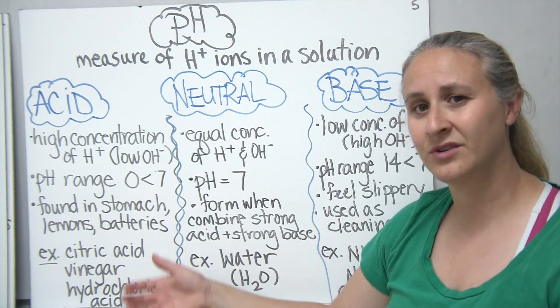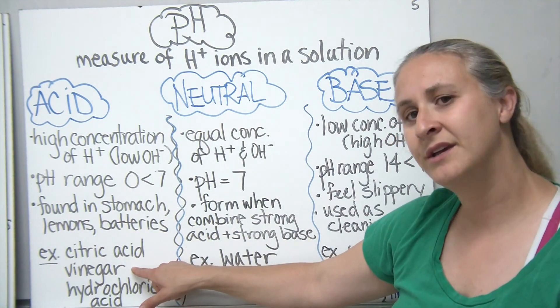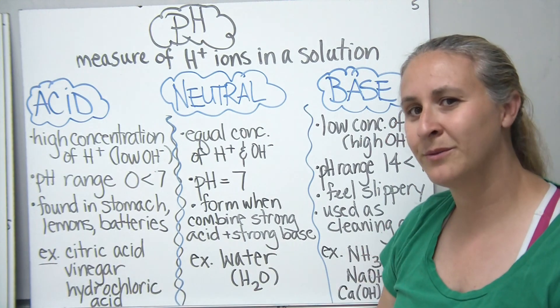So some examples of acids that you'd like to write down. Citric acid, which you could think of from our citrus foods like our lemons and our oranges and things like that. Vinegar, which many of you guys are probably familiar with.